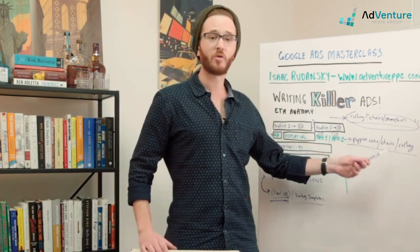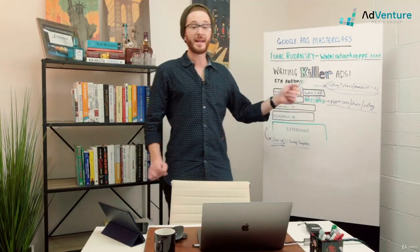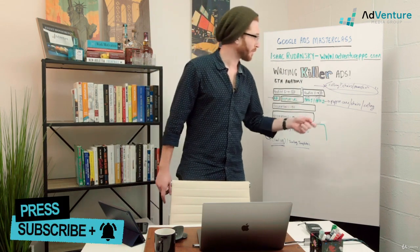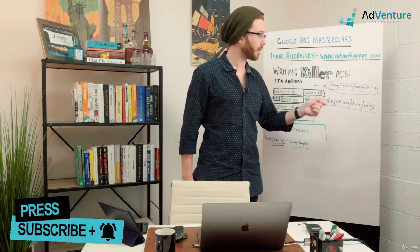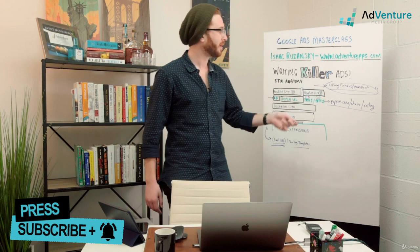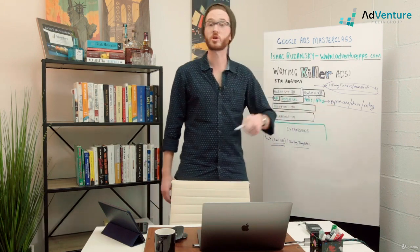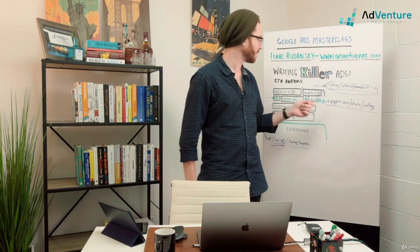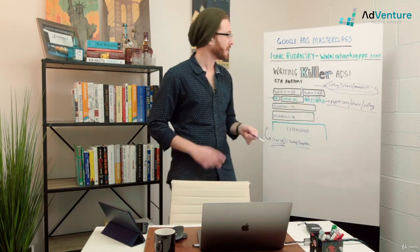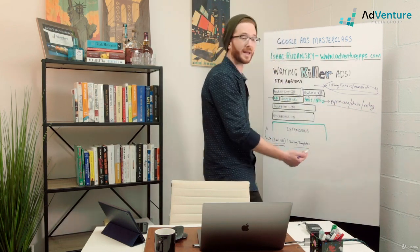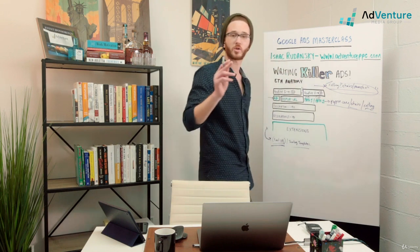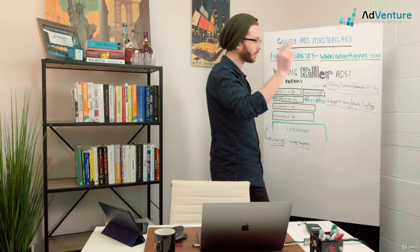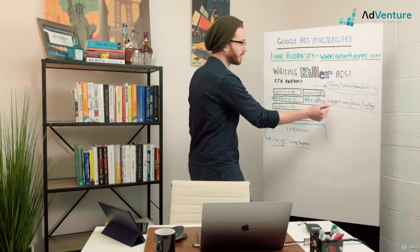Interestingly enough, I wasn't going to cover this, but we've seen time and time again that putting paths that are relevant to the search term—the keywords in your paths—so if I have keywords like 'office chairs' or 'rolling chairs' and I have that in my path, quality score goes up. It does affect quality score, click-through rate will go up, and it's a really smart way to use display URLs.